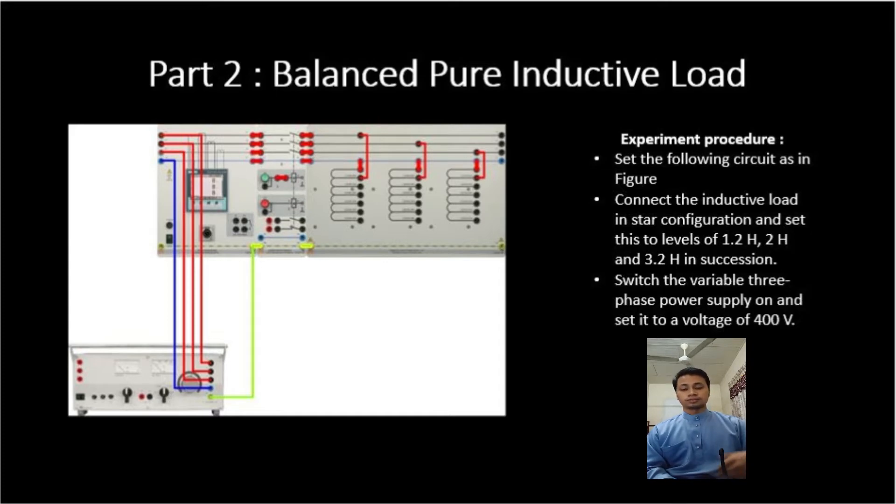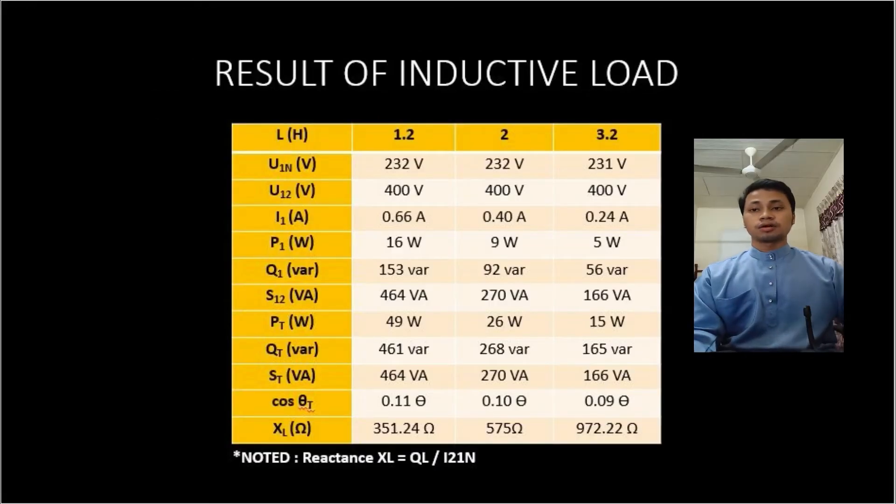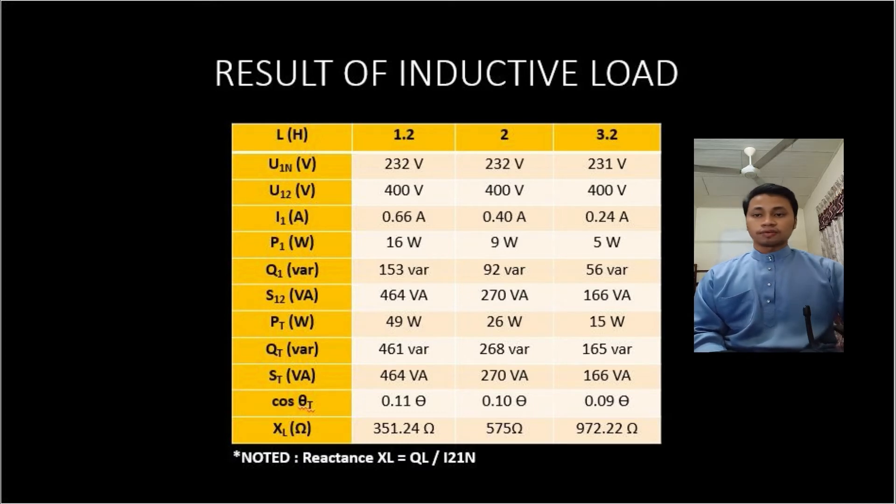Switch the variable three-phase power supply on and set it to a voltage of 400 volts. And then this is the result of the inductive load for the 1.2 Henry, 2 Henry and 3.2 Henry. We can see that the formula for the reactance is QL divided by I squared and the result is for the 1.2 Henry is 351.24 Ohms and for the 2 Henry is 575 Ohms and for the 3.2 Henry is 972.22 Ohms.